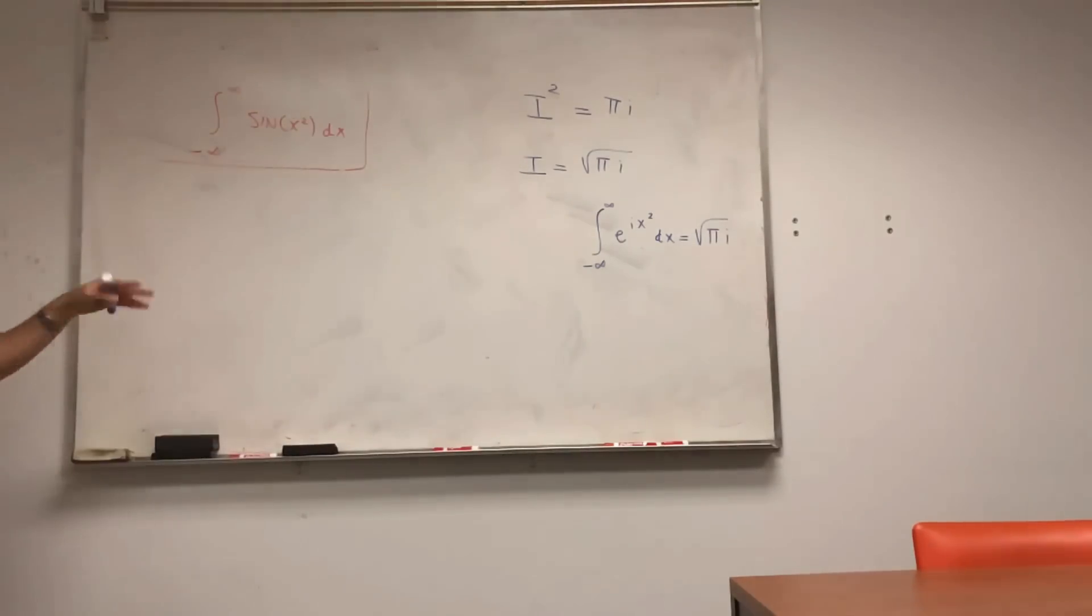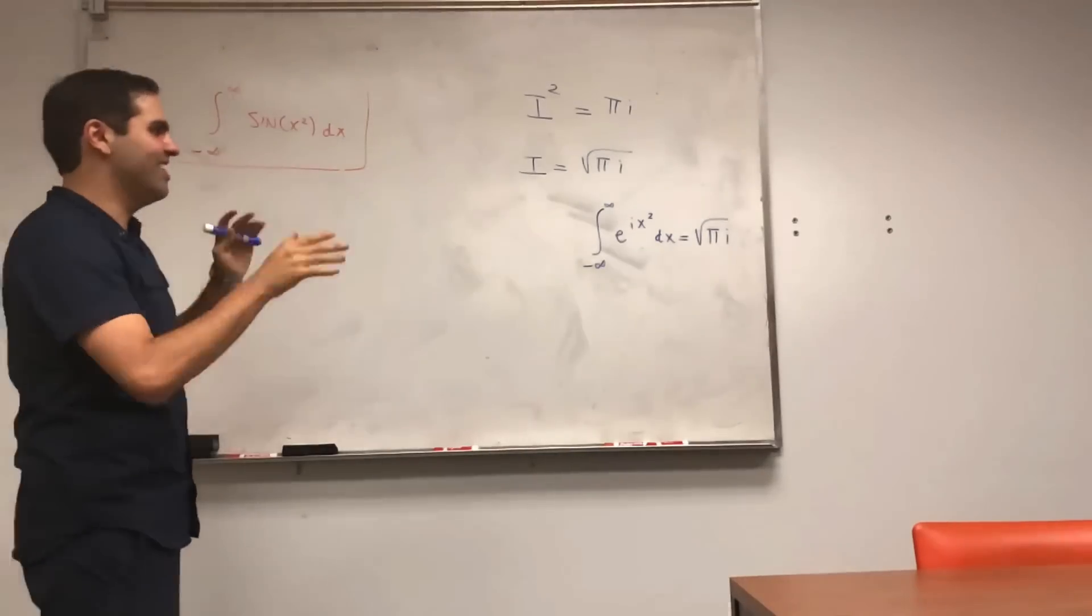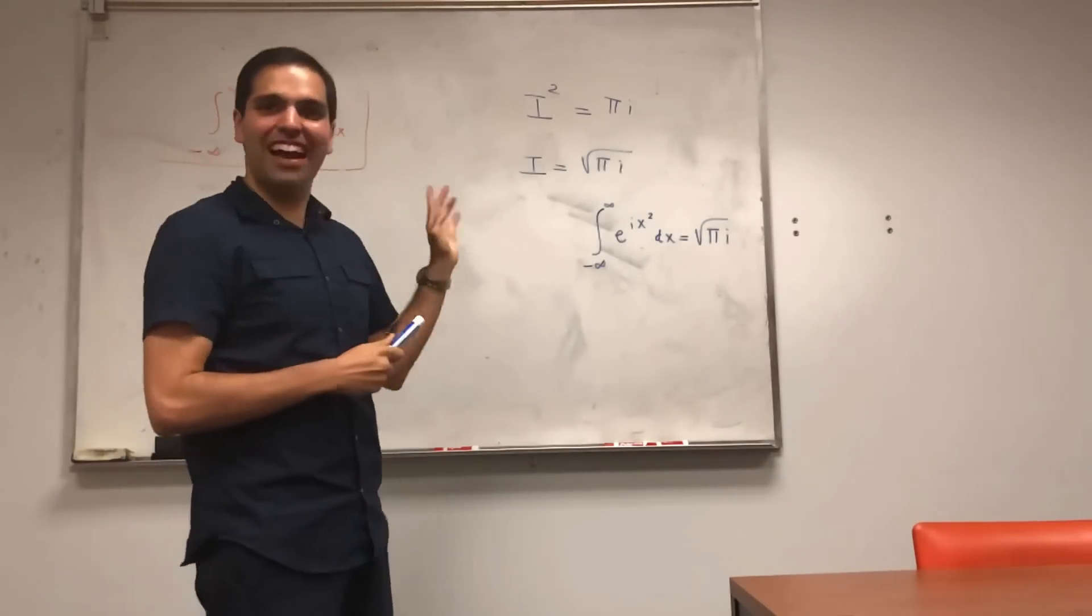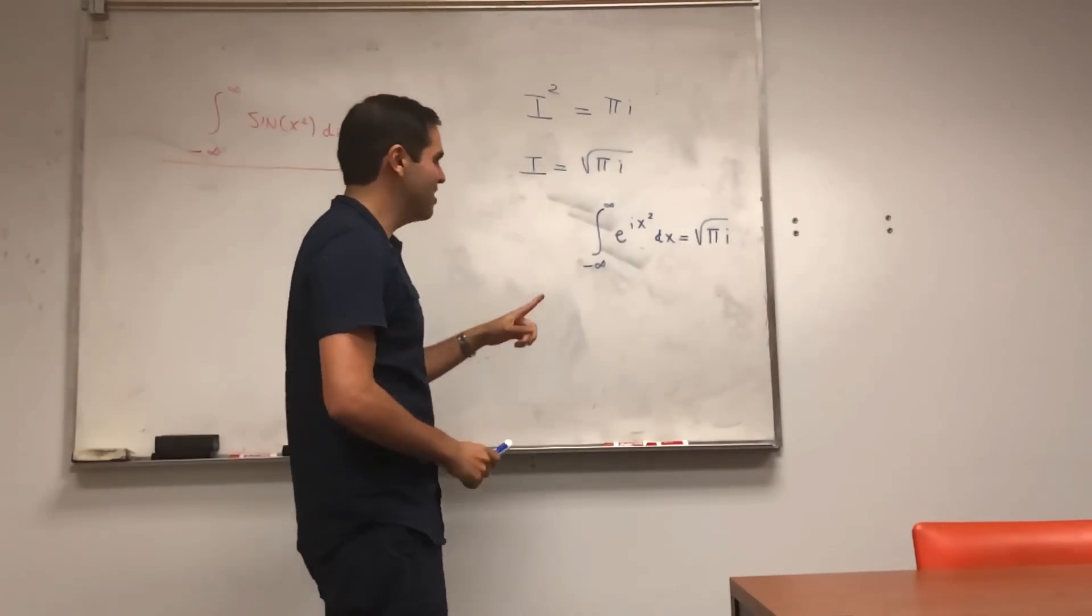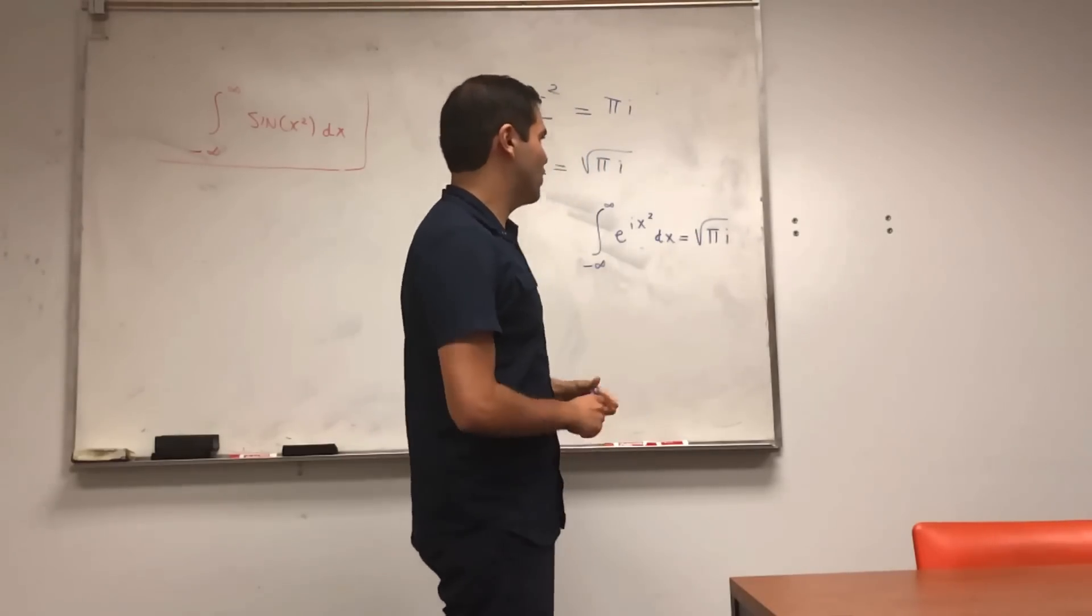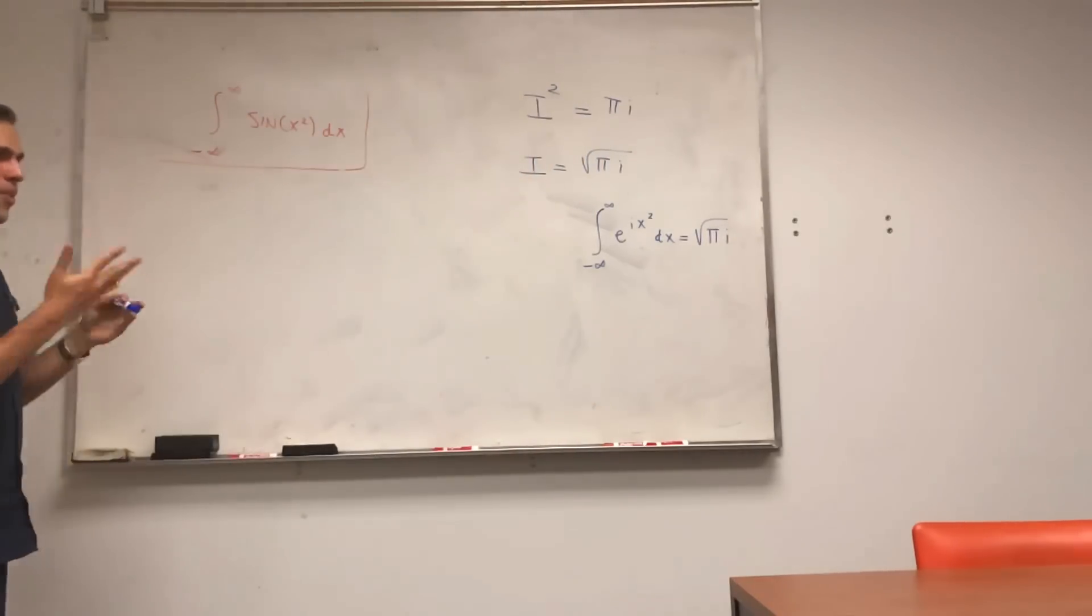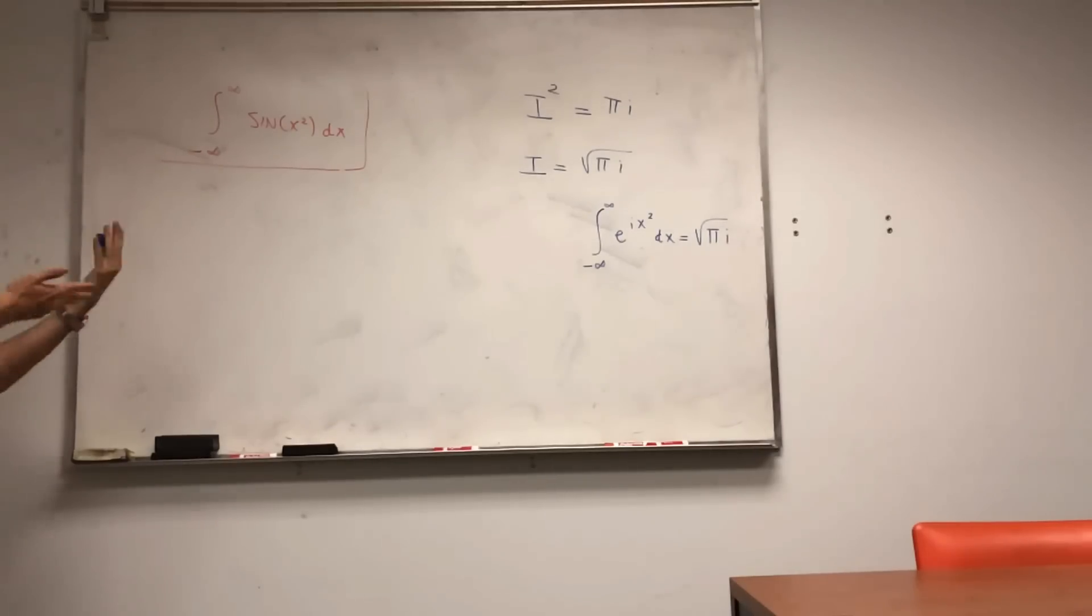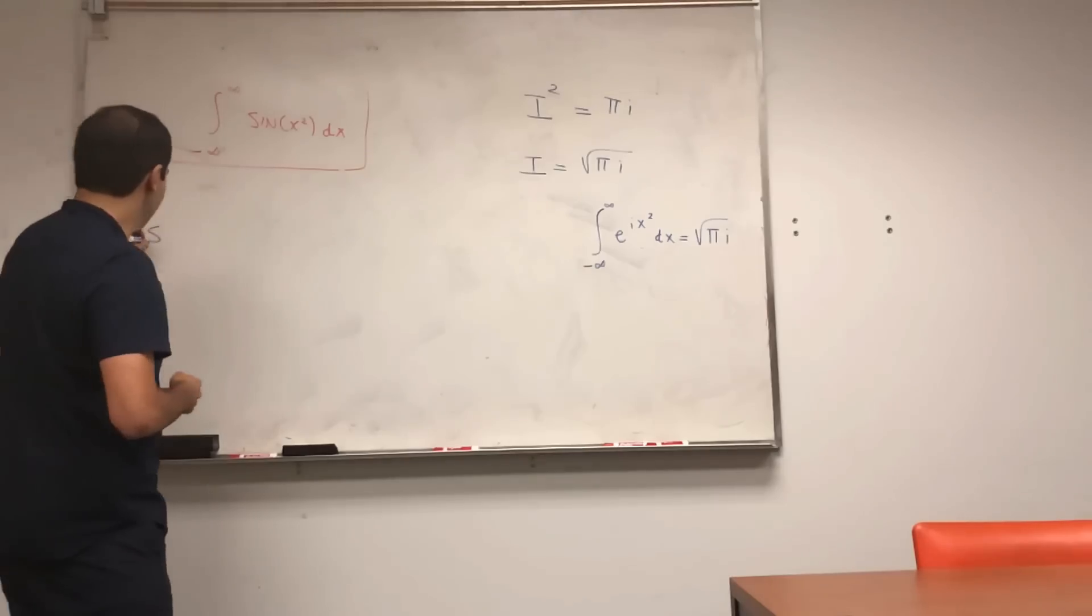And we get integral from minus infinity to infinity of e to the ix squared dx equals to square root of pi i. Sorry to be infesting my channel with this junk of non-rigorousness, but I still think it's a very neat result.